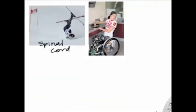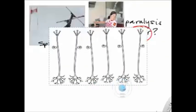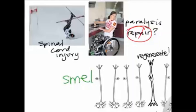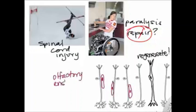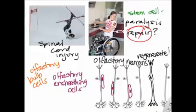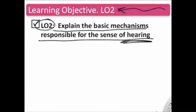Currently there are no treatments to repair an injured spinal cord. However, olfactory neurons are among the few central nervous system neurons that can regenerate. This makes their helper cells — olfactory ensheathing cells — as well as olfactory bulb cells and olfactory neurons themselves, of great interest for potentially repairing spinal cord injuries, either using these cells directly or developing stem cell-based treatments.